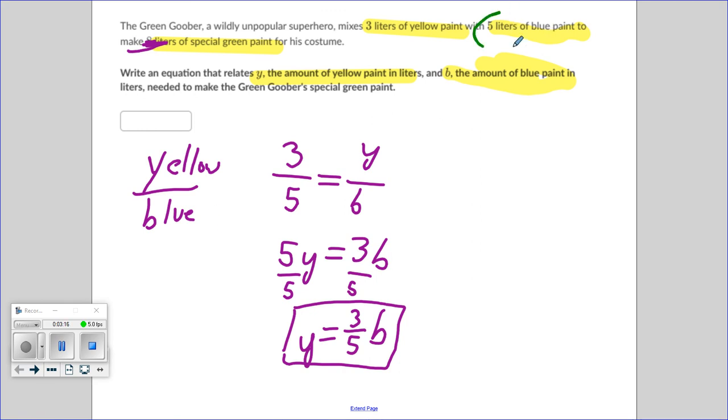When it's five liters of B, and I replace B with five here, so I get Y equals three fifths times B is five, five over one.